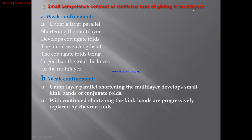In cases of small competence contrast or restricted gliding in multi-layers: under weak confinement with layer-parallel shortening, multi-layers develop conjugate fold types, with the initial wavelength of conjugate folds being larger than the total thickness of the multi-layer. Moving toward moderately strong confinement, the multi-layer develops small kink bands — increasing confinement leads to kinking-type folds.